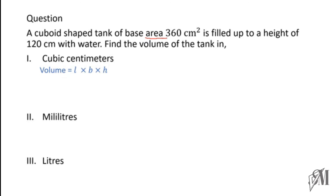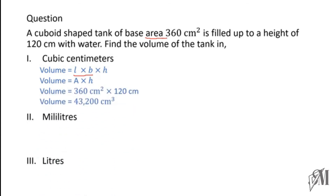Since length × breadth equals area, we can rewrite the equation as: volume = area × height. Substituting, area is 360 square centimeters and height is 120 centimeters. The answer is 43,200 cubic centimeters.